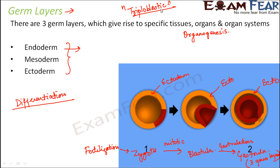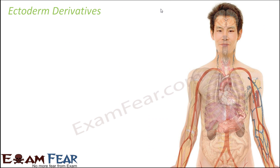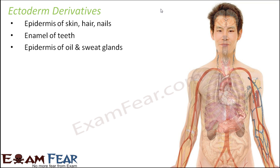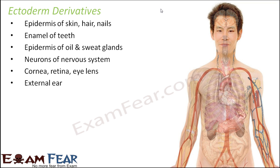Now let us see how each germ layer differentiates to form various organs, starting with ectoderm derivatives — the tissues and organs formed by differentiation of ectoderm. Ectoderm forms the epidermis of skin, hair and nails, enamel of teeth, epidermis of oil and sweat glands, neurons of the nervous system, cornea, retina, eye lens, external ear, and mammary glands. An easy way to remember: most of these are external parts — outer layers of outer organs. So ectoderm forms most of the outer layers.